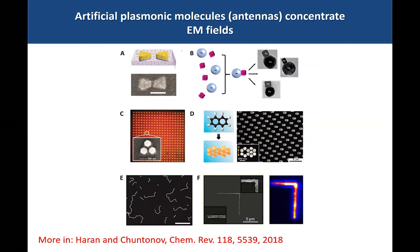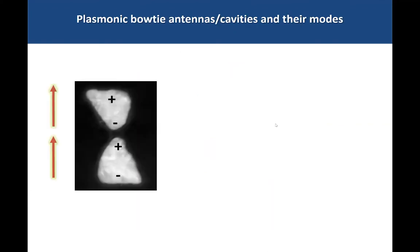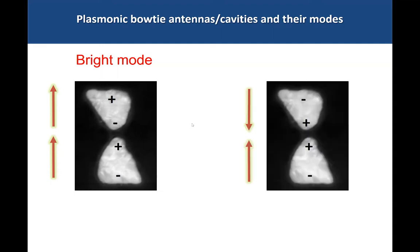For several years we've been interested in what we call plasmonic molecules — combinations of plasmonic particles that come together and have interesting responses because of interesting local modes of excitation that can emit to the far field or have interesting near-field responses. We focus on bowtie antennas. The lowest energy mode is a combination of two dipoles, one in each particle, combined to form this charge arrangement. We call this a bright mode because the two dipoles combine and emit to the far field.